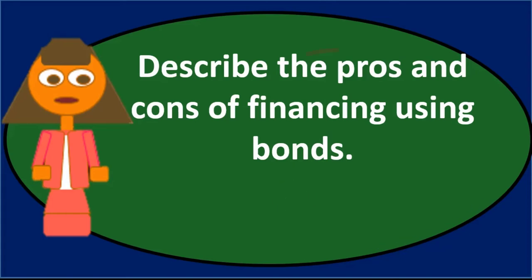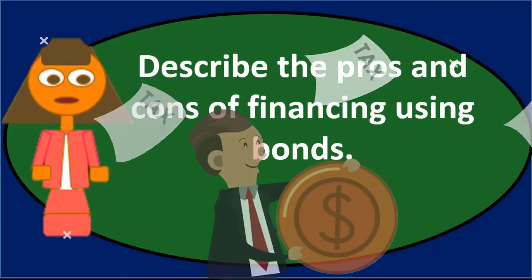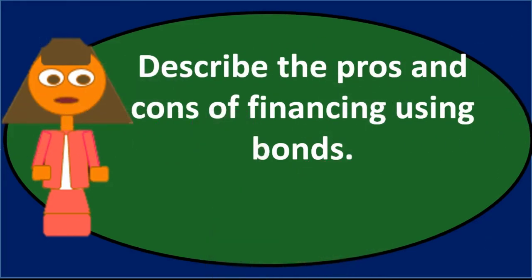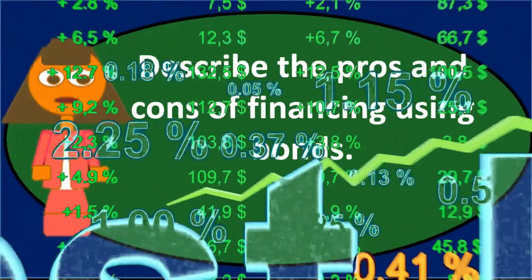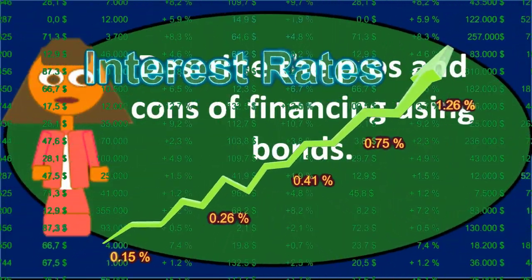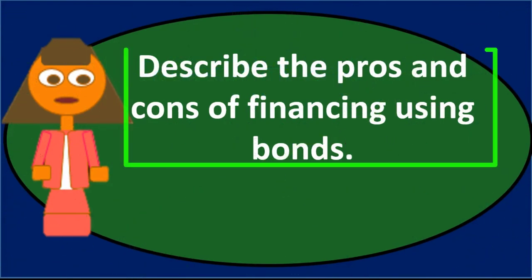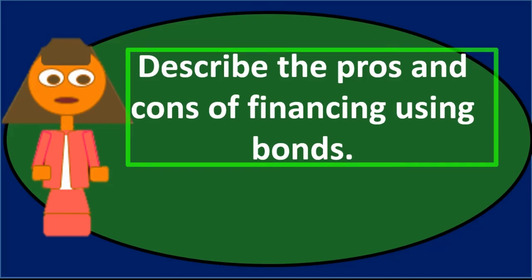One silver lining of paying interest on a bond is that the interest is usually tax deductible, meaning it lowers our taxable income because it's an expense, and therefore lowers our taxes. That doesn't make paying interest a good thing — we still have to pay it — but at least we get to deduct it and lower the amount of taxes we owe because of the interest we're paying.